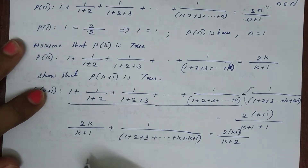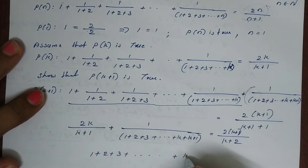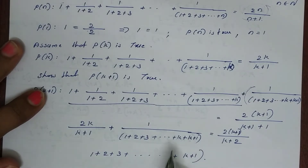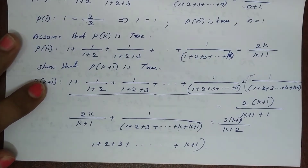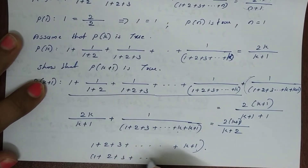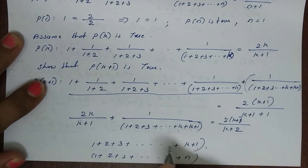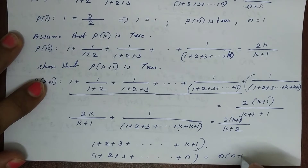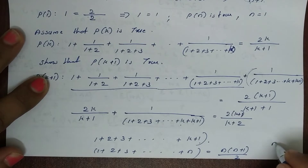We know that 1 plus 2 plus 3 plus etc. plus (k+1) can be evaluated using the sum formula. The sum of n terms is n(n+1) divided by 2. So for n terms, the sum is n(n+1)/2. We apply this formula substituting appropriately.